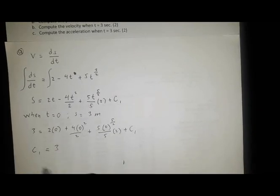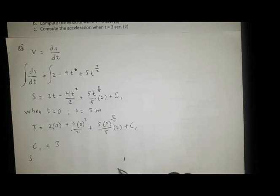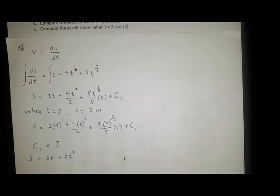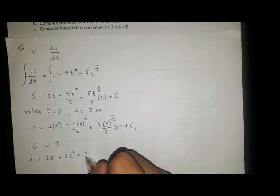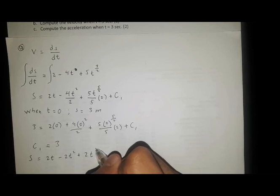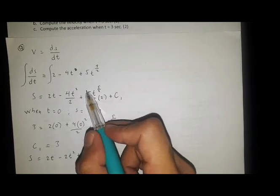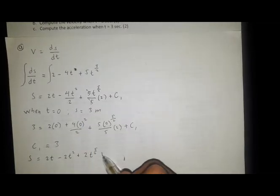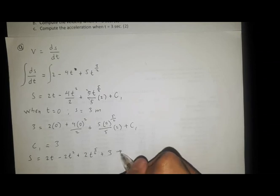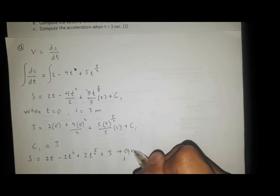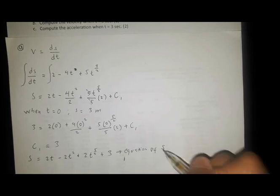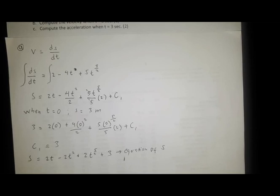We can rewrite the equation as s equals 2t minus 2t squared plus 2t raised to 5 halves plus 3. This is our equation of position s.